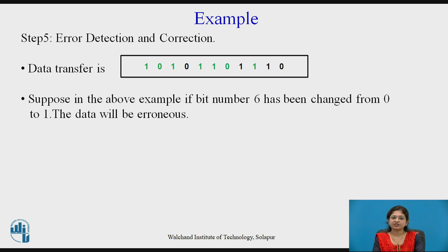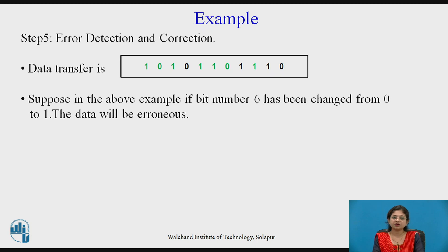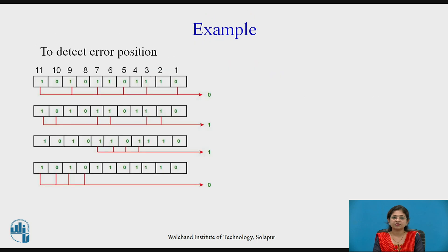Error detection and correction: the data transferred is 1, 0, 1, 0, 1, 1, 0, 1, 1, 1, 0. Suppose during transmission an error occurs — Hamming code detects single bit errors. Suppose bit number 6 has been changed from 0 to 1, making the data erroneous.